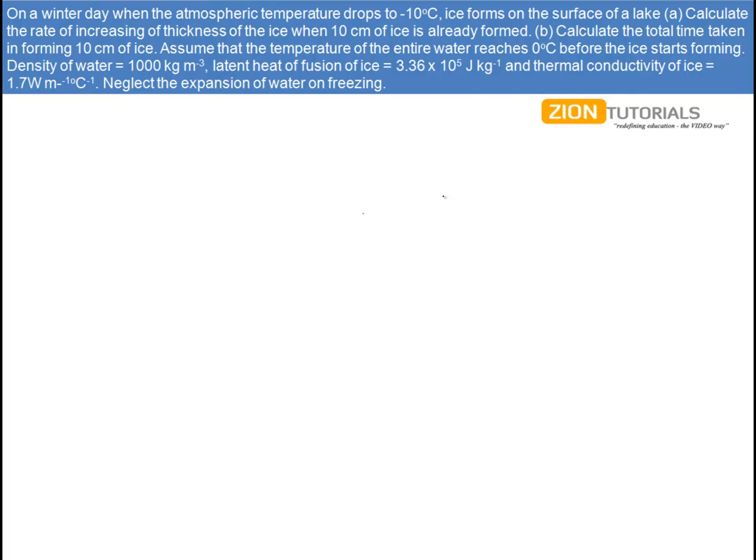On a winter day, when the atmospheric temperature drops to minus 10 degrees Celsius, ice forms on the surface of a lake. Calculate the rate of increasing thickness of the ice when 10 cm of ice is already formed.